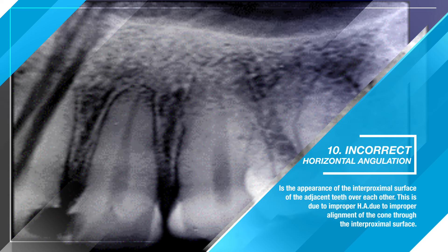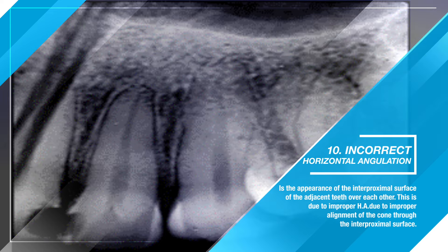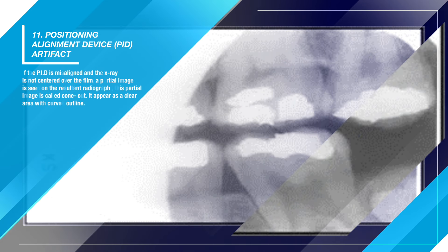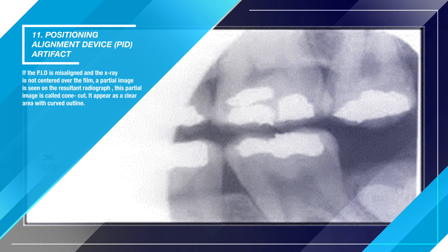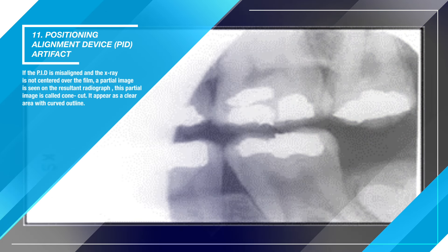Ten — incorrect horizontal angulation. This is the appearance of the interproximal surfaces of adjacent teeth overlapping each other, due to improper alignment of the cone through the interproximal surface. Eleven — positioning alignment device (PID) artifact. If the PID is misaligned and the x-ray is not centered over the film, a partial image is seen on the resultant radiograph. This partial image is called a cone cut, and it appears as a clear area with a curved outline.